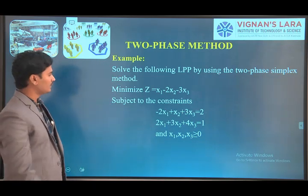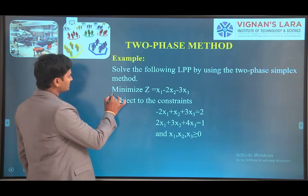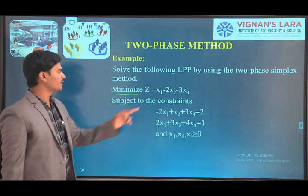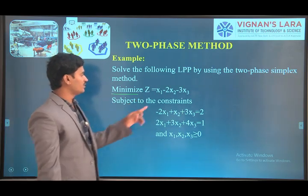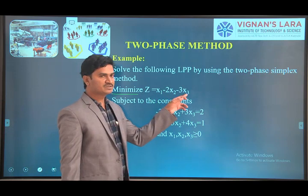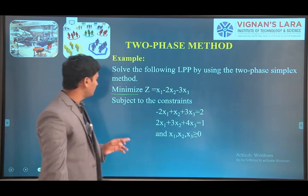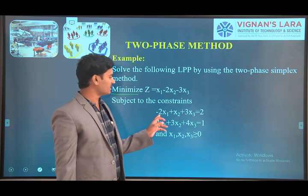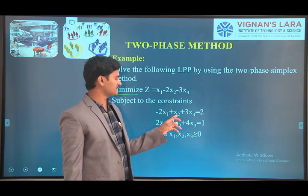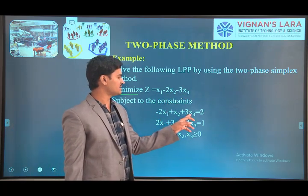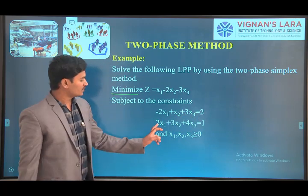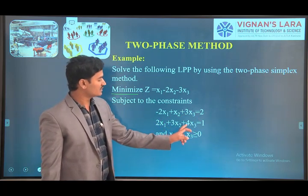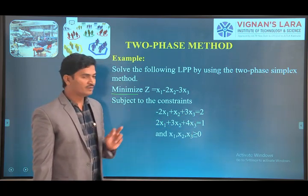The objective function is: minimize z = −x1 − 2x2 − 3x3, subject to the constraints: −2x1 + x2 + 3x3 = 2, and 2x1 + 3x2 + 4x3 = 1.